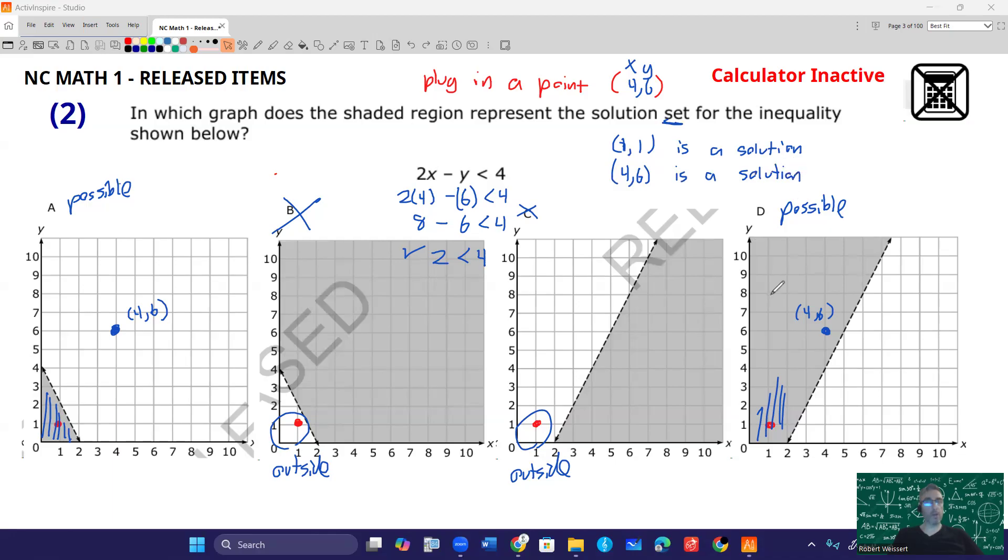Now, only one of these graphs has both of those coordinates as solutions, and it's not A. So the answer is going to be D. So that's a method you can use by simply picking points that are common through all the graphs and seeing which ones work. Now, it requires more thinking, but it is less work if you don't feel like solving the inequality by hand. Hopefully that helps. Thank you for watching.